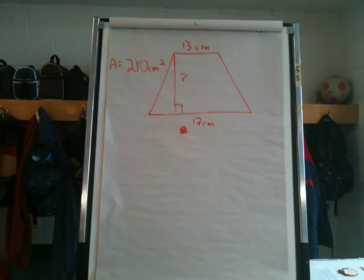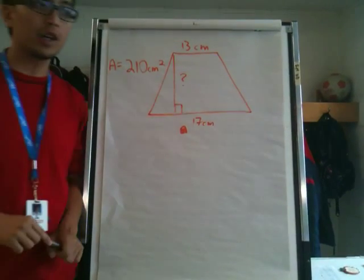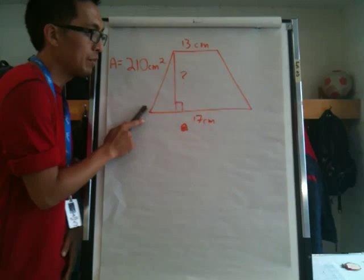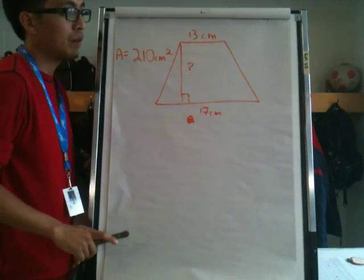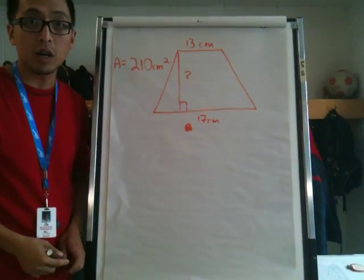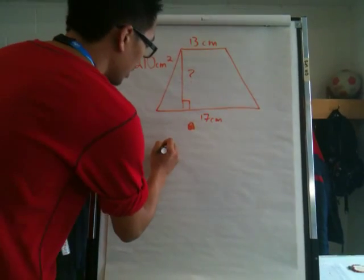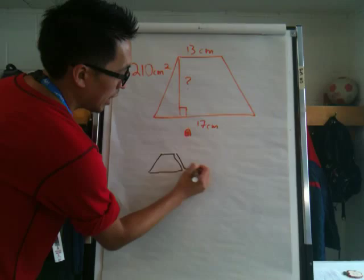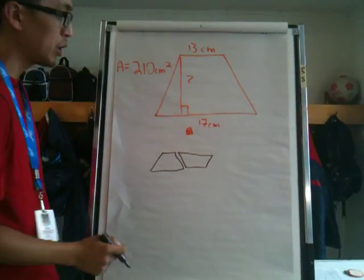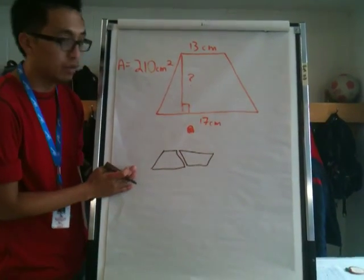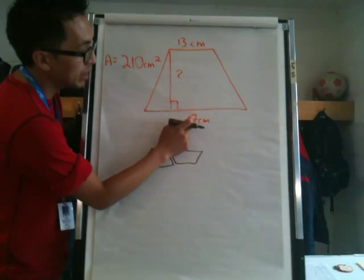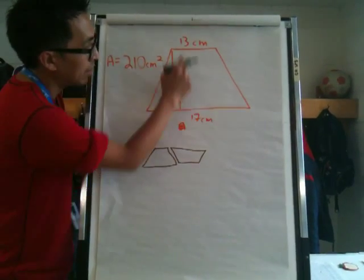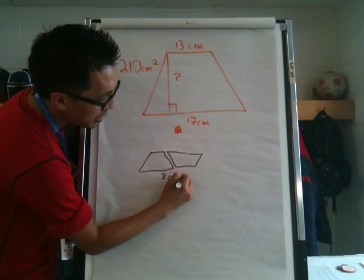So we're going to go back to that concept that we talked about earlier that Alexandra mentioned, where a trapezoid can turn into a parallelogram. For example, in this situation, if I took that trapezoid and duplicated it and flipped it over, I would then get a parallelogram. And that would mean that one side is now 17 plus 13, which is 30 centimeters.